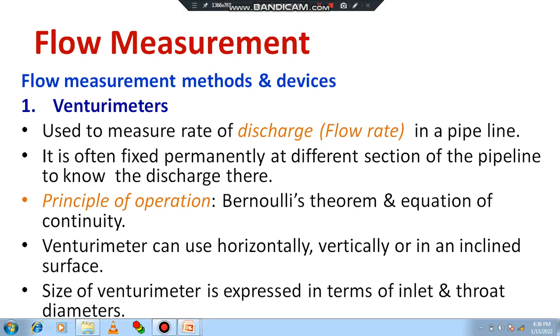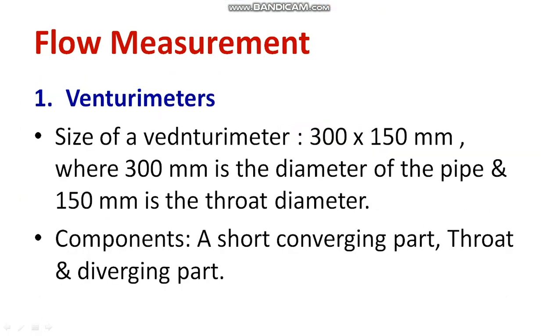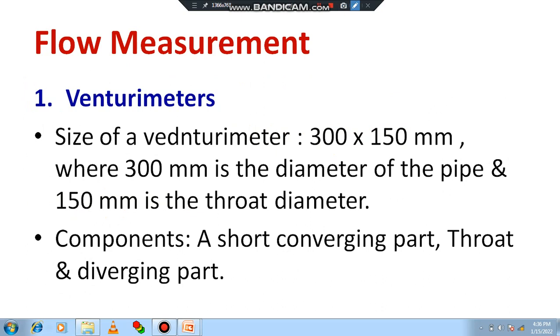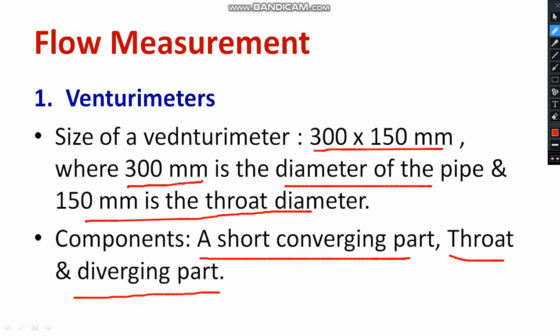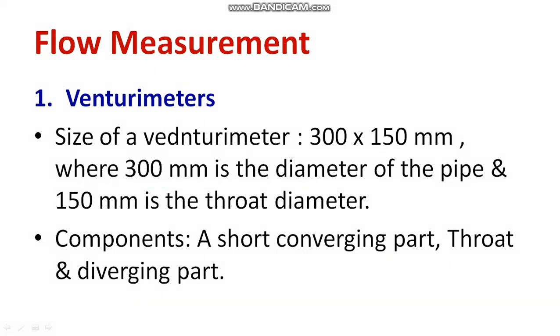Usually, the size of the venturi meter will be 300 and 150 millimeter, where 300 millimeter is the diameter of the pipe and 150 millimeter is the throat diameter. It comprises of three segments: a short converging part, at the middle there is a throat, and at the end part there is a diverging part. I will show you the particular diagram of venturi meter.